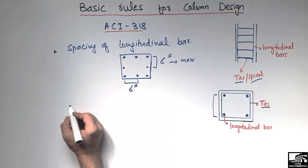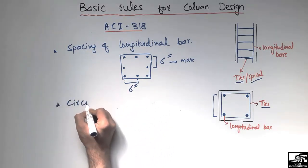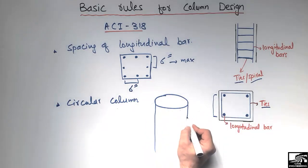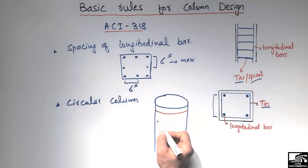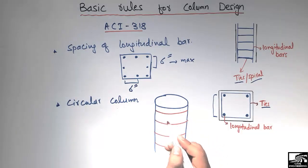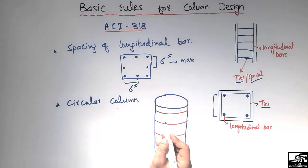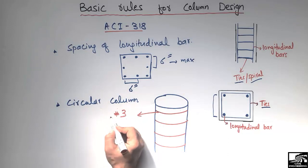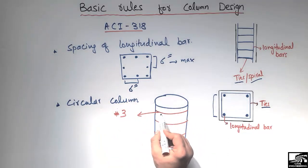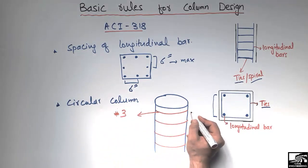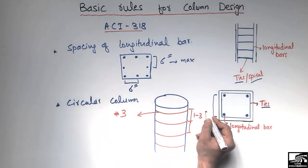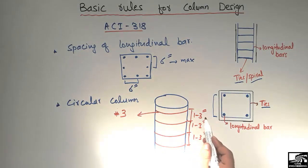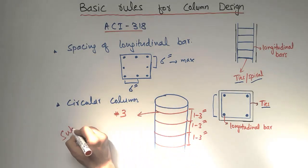The American Concrete Institute has also provided some rules for the design of circular column. There are two important rules. First, the minimum bar size used for the spiral should be number 3 bar — we cannot use less than number 3 bar. Second, the spacing between the spiral should be in the range of one to three inches. These are the basic rules for circular column design.